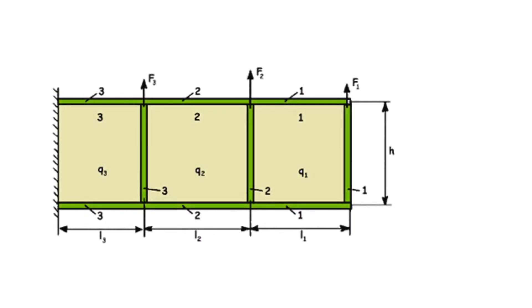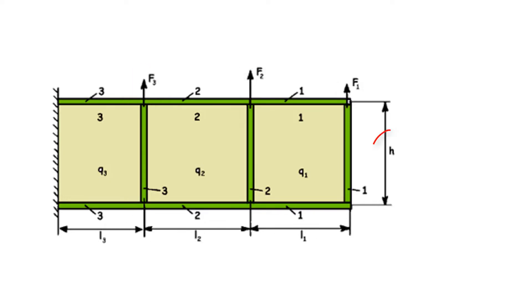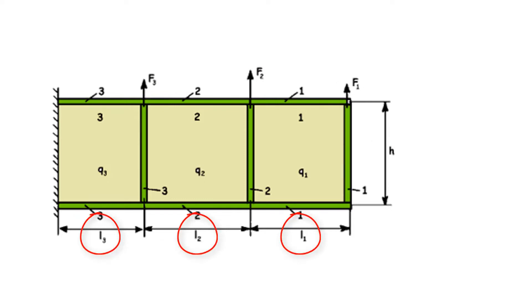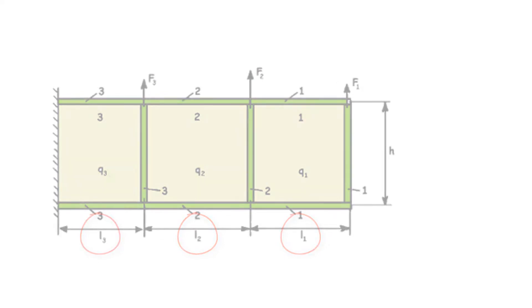Let's now look at bending of a simplified wing spar. We are looking at a clamped spar structure consisting of three frame elements connected to each other. The spar structure is loaded at the top joints by three vertical upward forces. The frame has a height of h and the length of the horizontal spar caps varies.